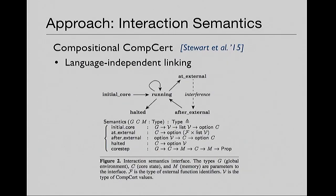Going back to square one: the question is how do we express that equivalence? Someone has given us an ET prime. I want source-independent linking, so somehow I want to use the same ET prime. What I want out of my compiler correctness theorem is: these two put together behave the same as those two put together. But that means: how do I put together source and target components? You need a semantics of source and target interoperability. Compositional CompCert does that using something called an interaction semantics. In our work, we use a multilanguage that combines source and target and allows them to interoperate.